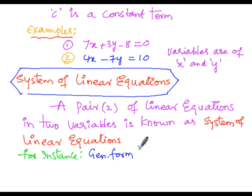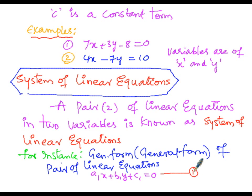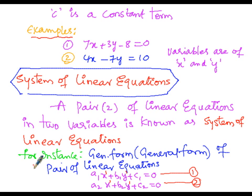The general form of a pair of linear equations is stated as follows. The first equation is a1x plus b1y plus c1 equals to 0, and the second equation is a2x plus b2y plus c2 equals to 0. In each equation, the degrees of x and y are both one. Put together, these two equations are called a pair of linear equations. By assuming different values for a1, b1, c1 and a2, b2, c2, we can obtain many pairs of linear equations.